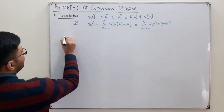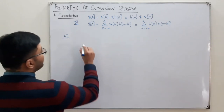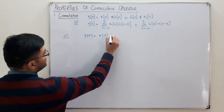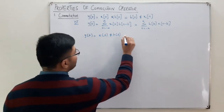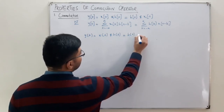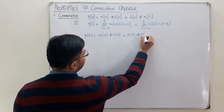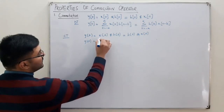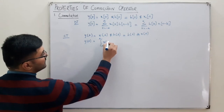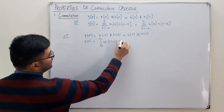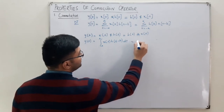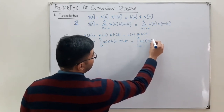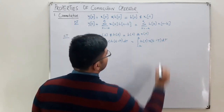Similarly, we have the same for continuous time. We know that y(t) equals x(t) convolved with h(t). According to the commutative law, this could also be h(t) convolved with x(t). That is, the integral from −∞ to +∞ of x(τ)·h(t−τ)dτ equals the integral of h(τ)·x(t−τ)dτ.